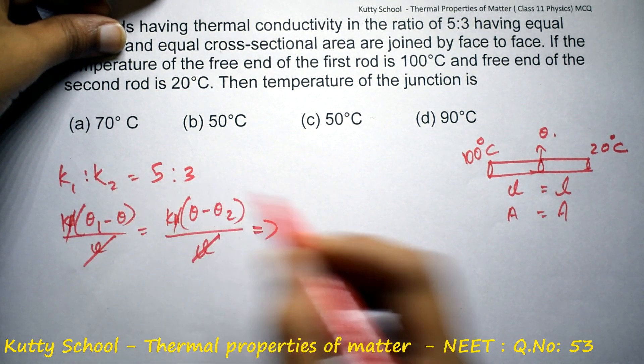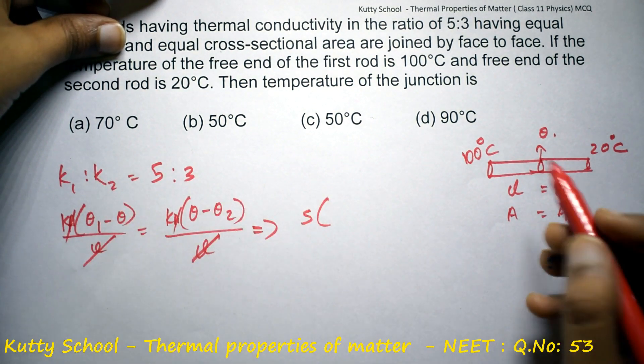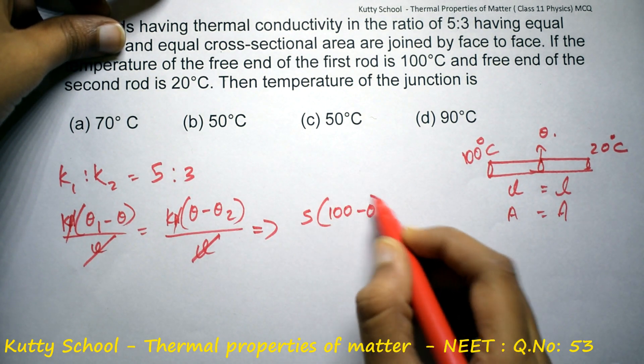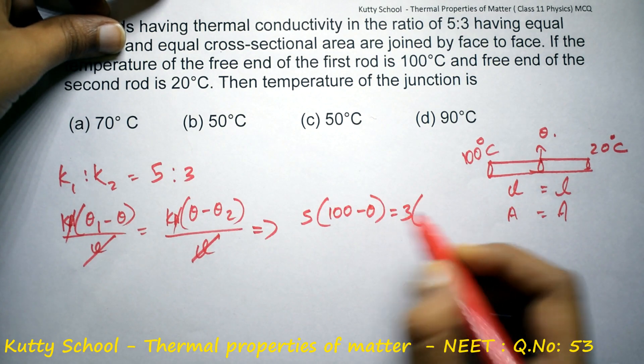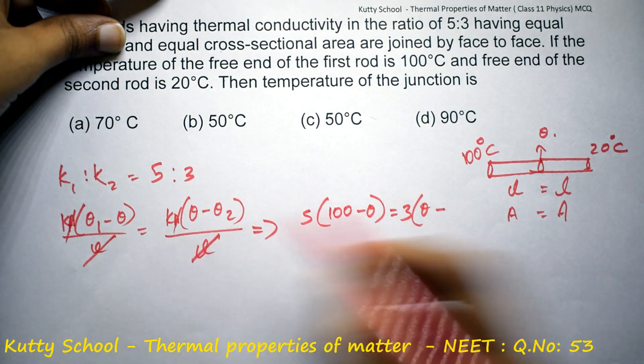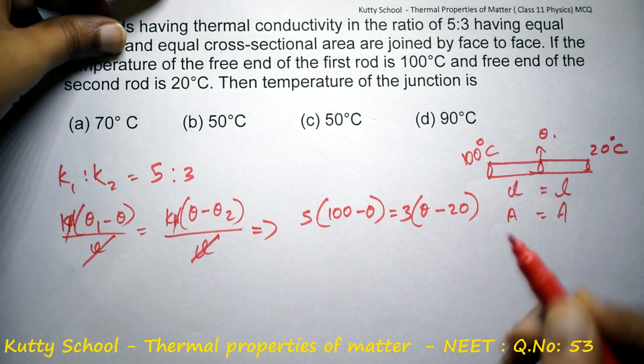Therefore, k1 which is 5 times 100 minus theta equals k2 which is 3 times theta minus 20.